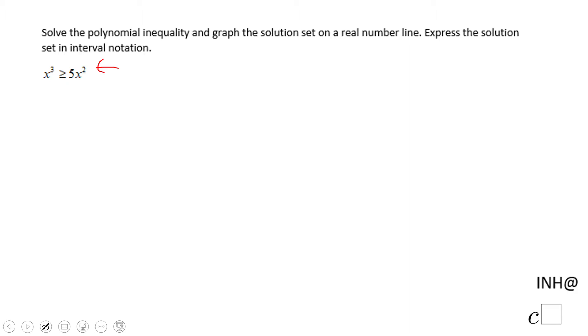The first thing you want to do is subtract 5x² on both sides and you end up with x³ - 5x² ≥ 0. So we always want to have zero on one side.